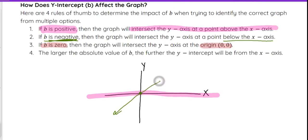So if we know that the equation has a b value of 0, that means it crosses the y-axis at the origin of 0, 0.